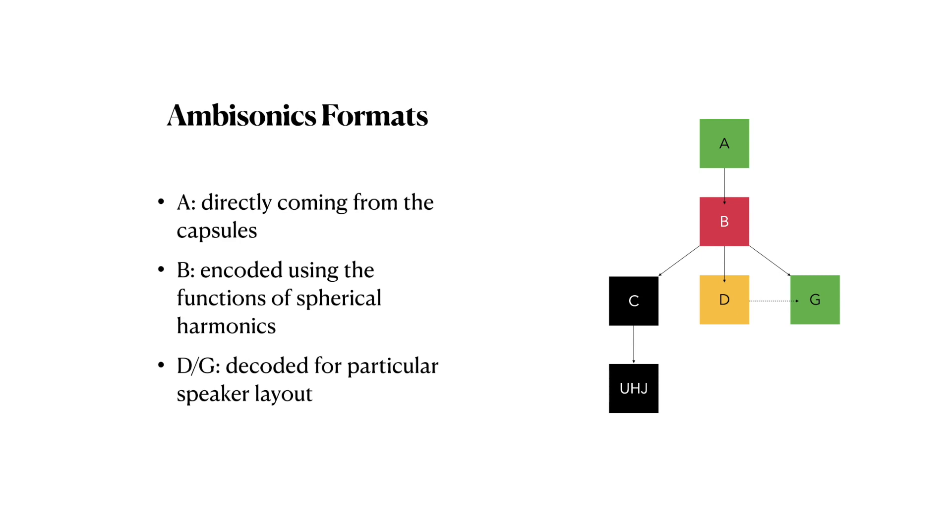At first, this ambisonics format would be called D-format, as for decoded format. But more important over time became the G-format, which is decoded to the 5.1 channel layout, but today it's mostly used for an ambisonics signal that was decoded into any loudspeaker setup.